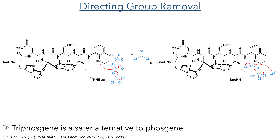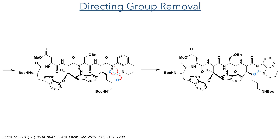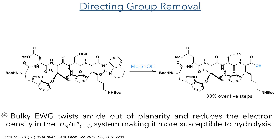Triphosgene is very electrophilic and was attacked by the nitrogen, eliminating a chloride anion and one equivalent of phosgene. This chloride then acts as a nucleophile and another equivalent of phosgene is eliminated. The amide can then attack the remaining acyl chloride forming a carbamate. This bulky electron-withdrawing group twists the amide out of planarity and reduces the electron density in the amide system, making it much more susceptible to hydrolysis. This directing group could therefore be selectively cleaved by trimethyltin hydroxide without hydrolysis of any of the other amides or esters present in the molecule.